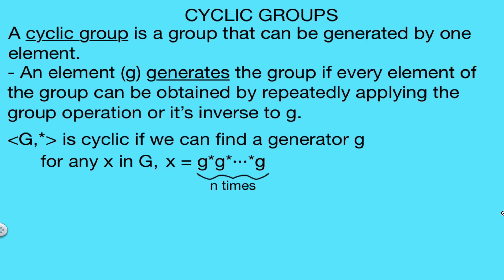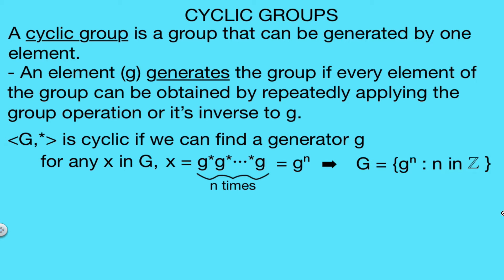This should be true for any element x in G. If we take star as regular multiplication, then this is just multiplying g with itself n times, which we can write as g to the nth power. Since any element x in our group G can be written entirely in terms of generator little g, we can write our group as all powers g^n for integer values of n. This tells us that little g is a generator for our group G.